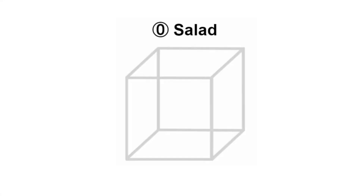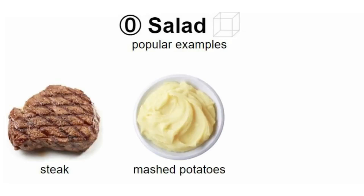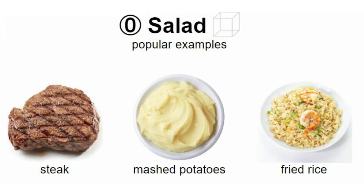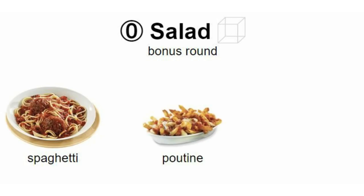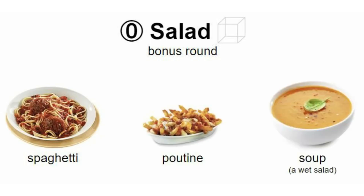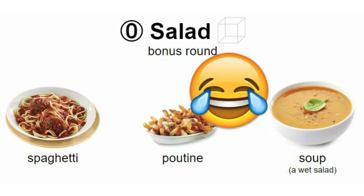Additional cube rulings: if it has zero sides, it is considered a salad. Examples: steak, mashed potatoes, fried rice. I guess these are starches but they're not surrounding anything. The fried rice is like tiny, tiny bits. There's also spaghetti, poutine, soup. Soup is a wet salad? What?